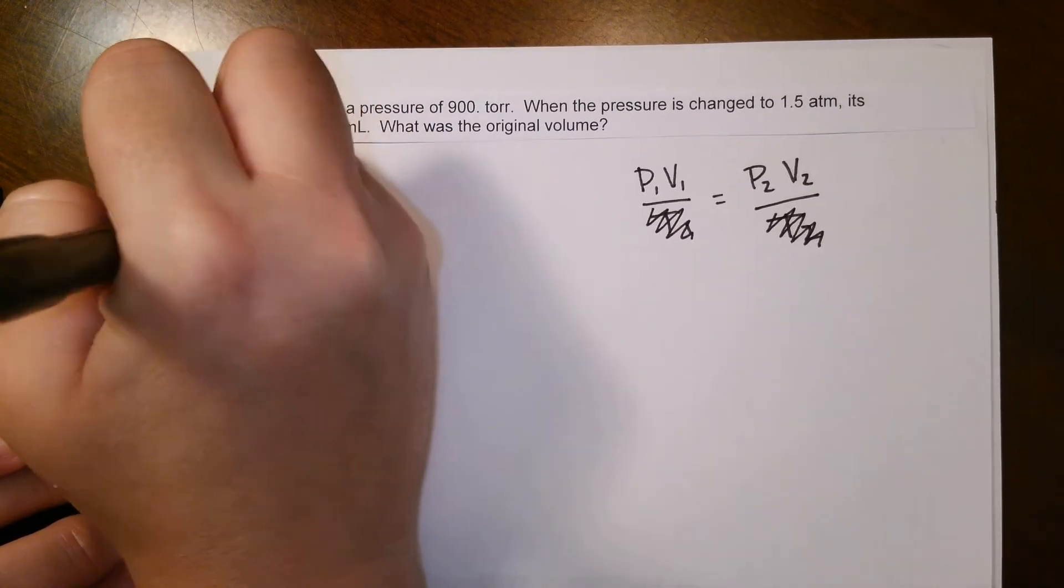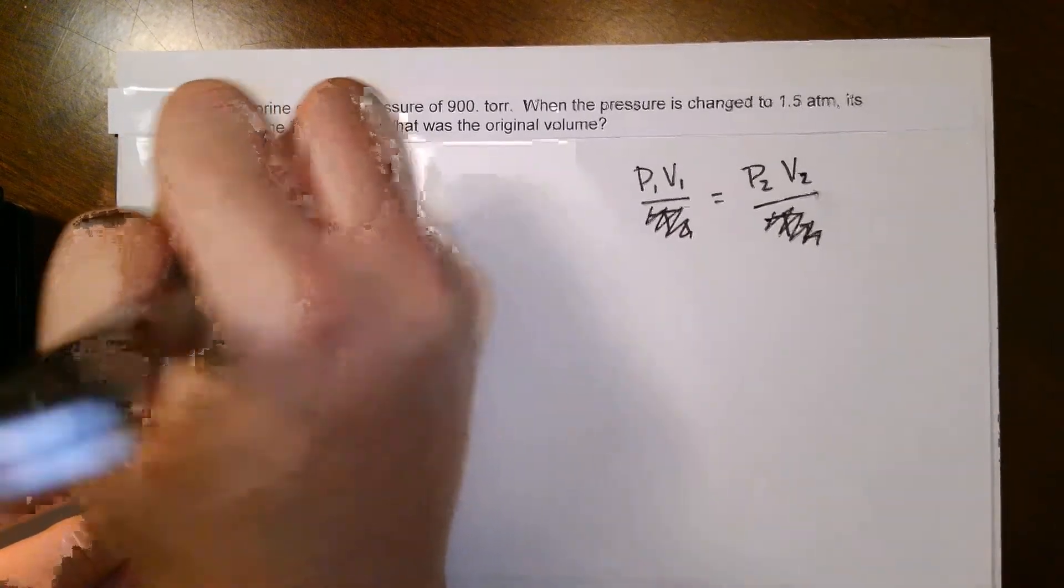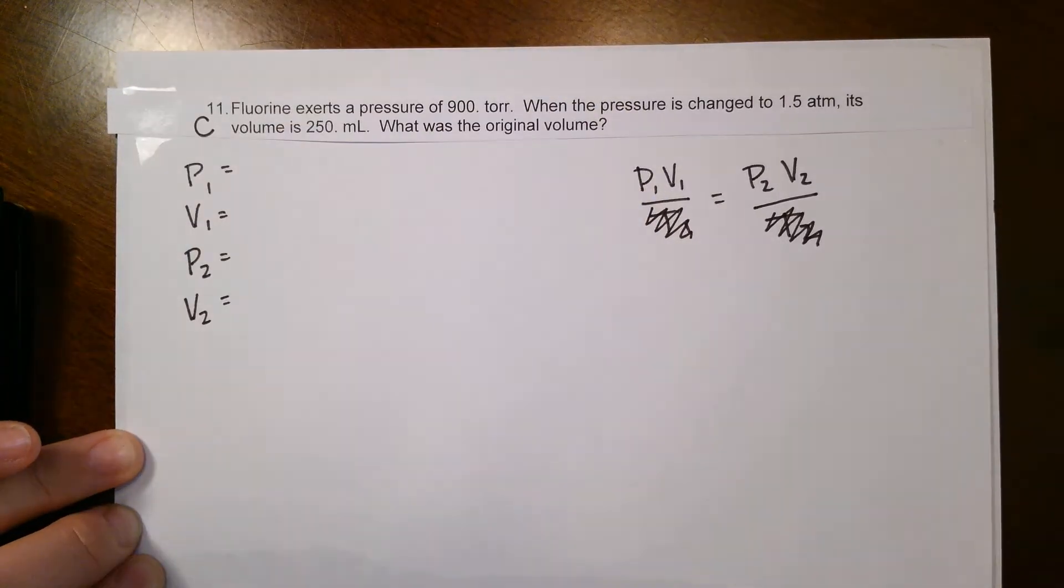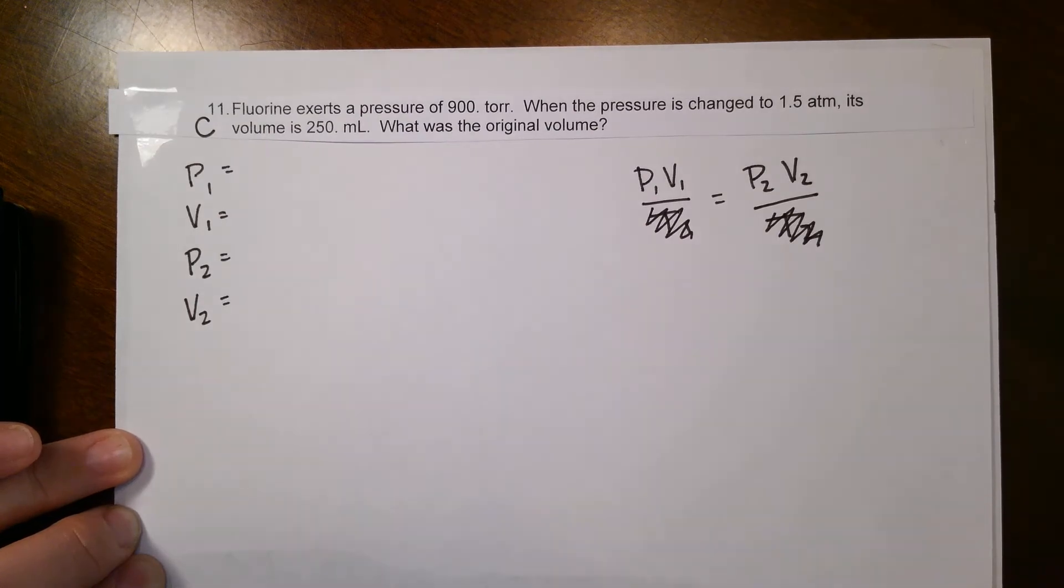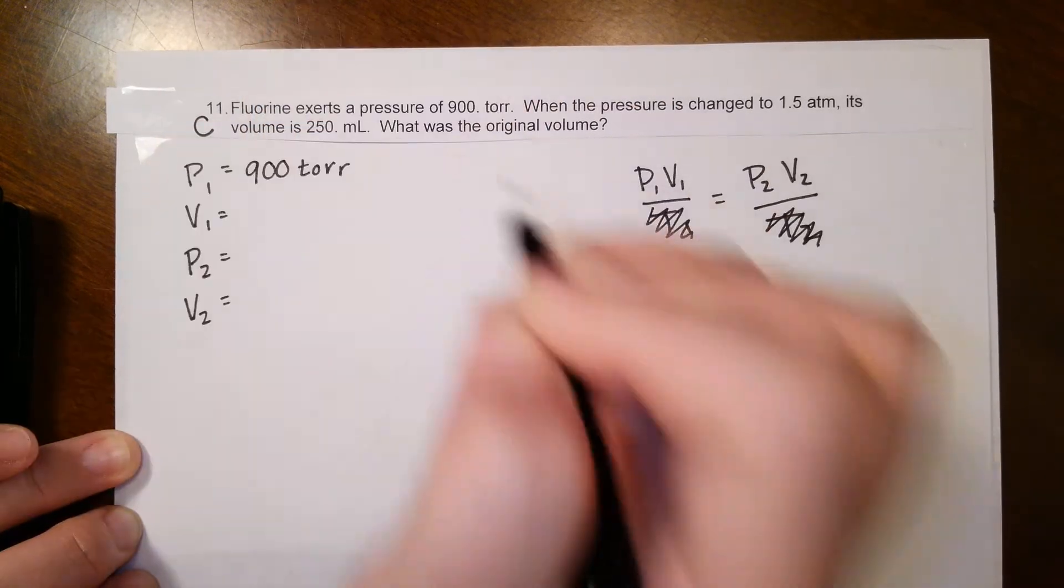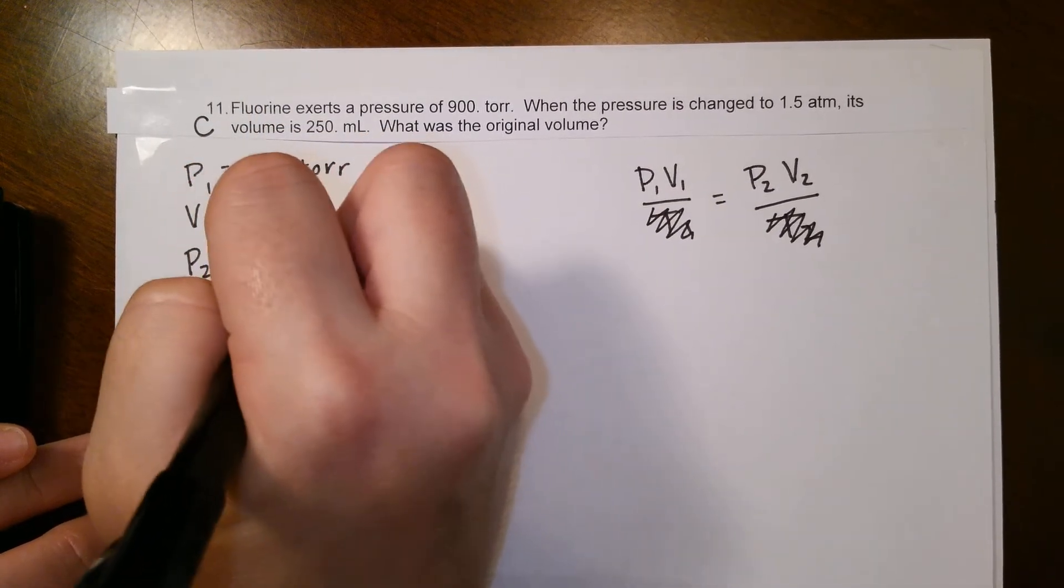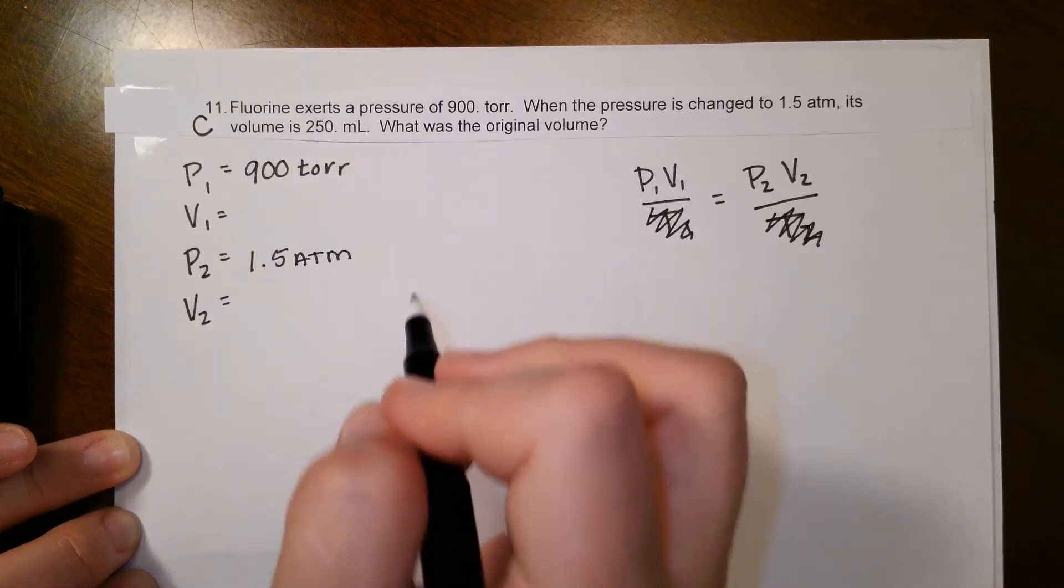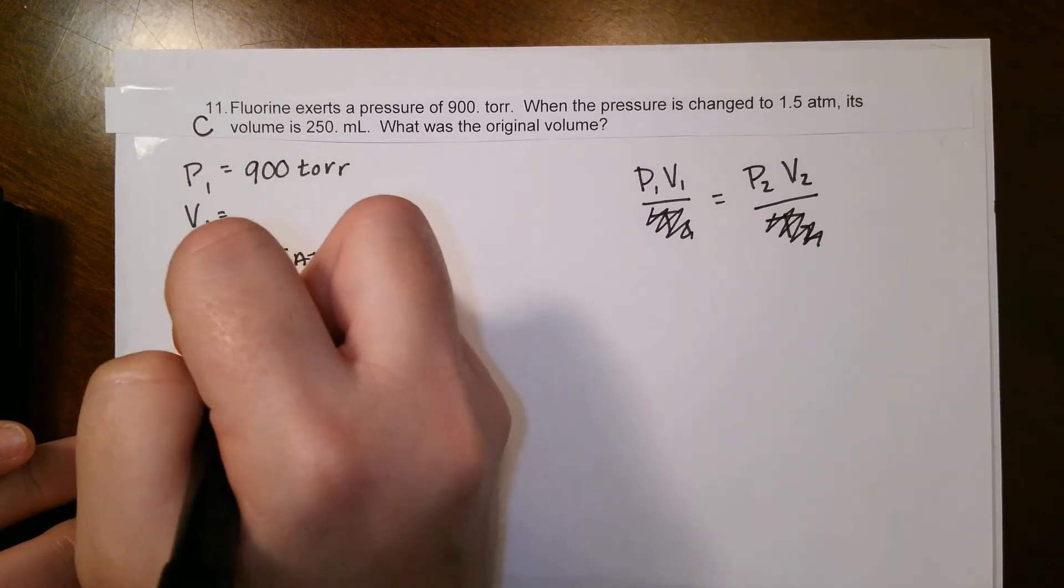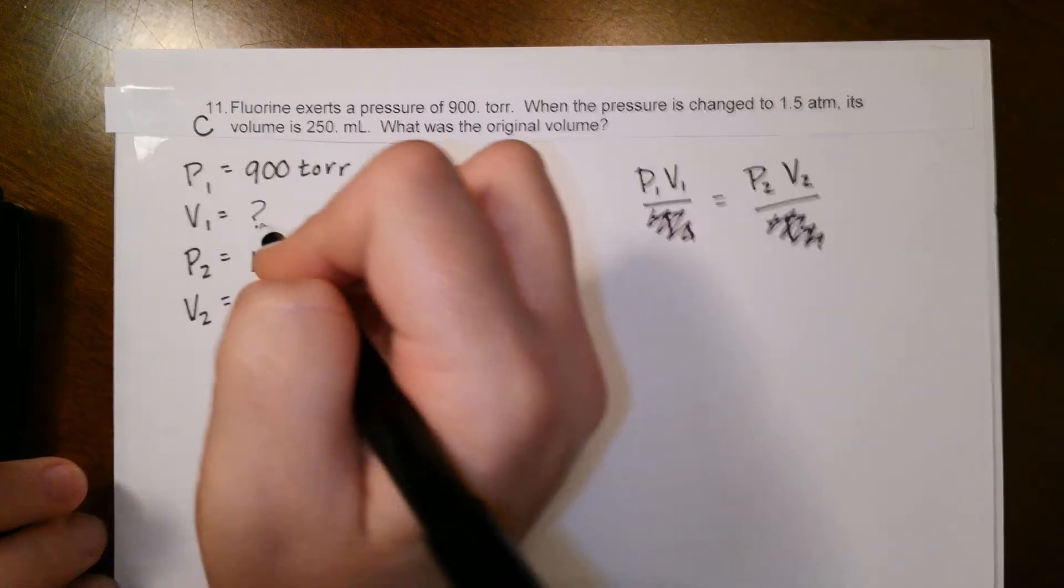So now we just have P1, V1, P2, and V2. Laying out those variables will make it a lot easier. It says fluorine exerts that pressure of 900 torr. When the pressure is changed to 1.5 atm, its volume is 250 milliliters. What is the original volume?